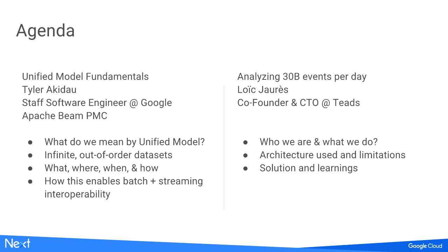I will discuss what we do at Tees, namely analyzing 30 billion events per day. I'll start by talking a bit about Tees the company, then explain the architecture we used for the past three years, with the issues and limitations we faced and the reason why we moved to a new solution. Finally, I'll describe this new solution and give you a few lessons we learned along the way.